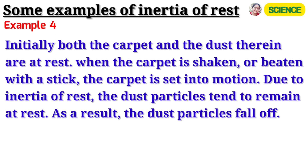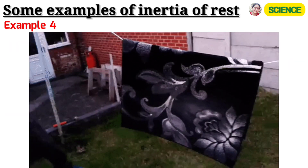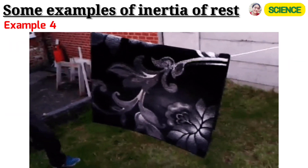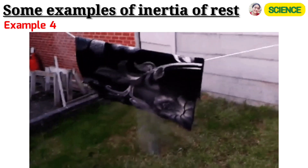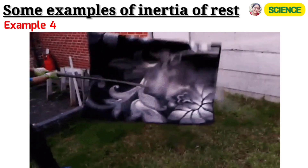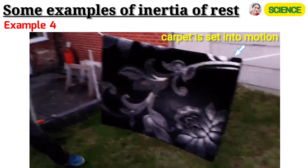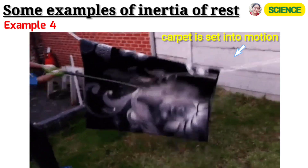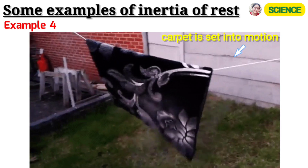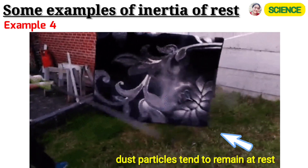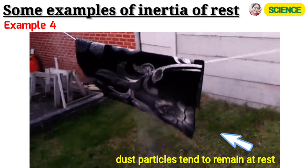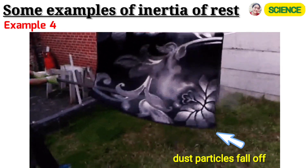Example 4: Both the carpet and the dust are at rest. When the carpet is shaken or beaten with a stick, the carpet is set into motion. Due to inertia of rest, the dust particles tend to remain at rest. As a result, the dust particles fall off.